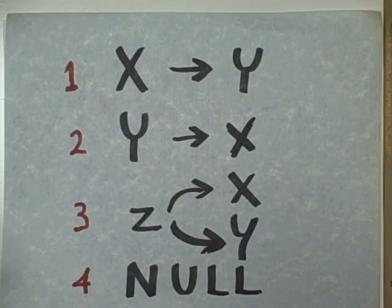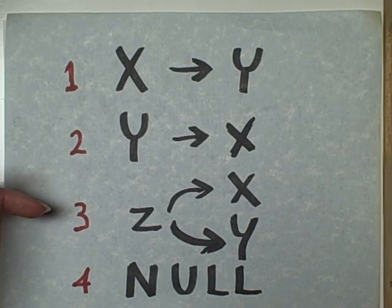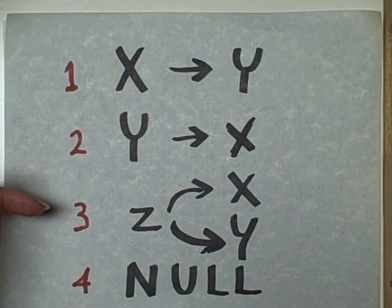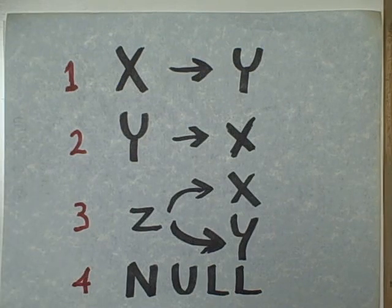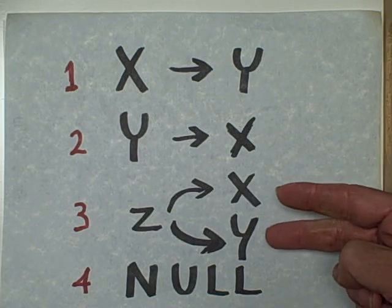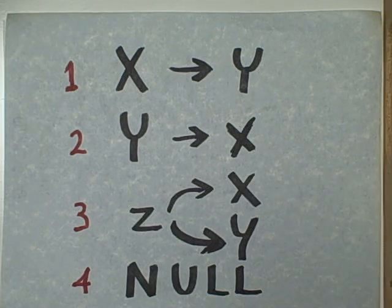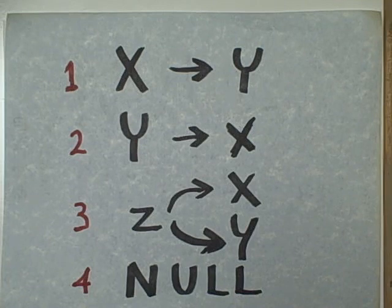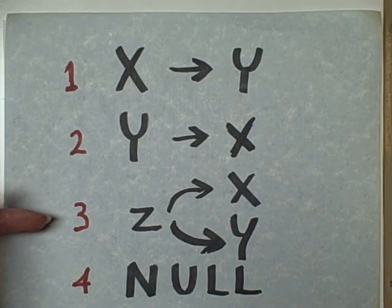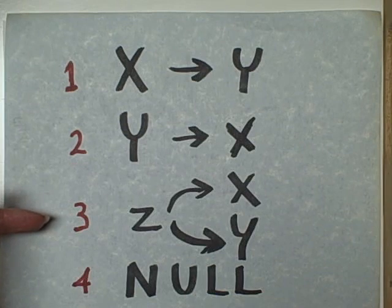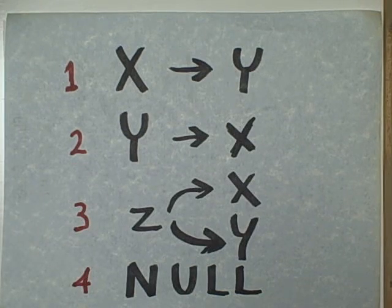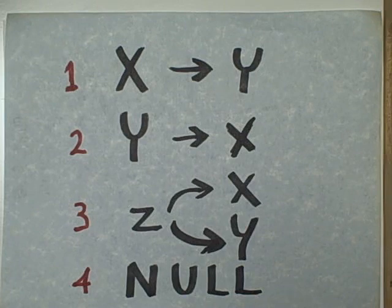But there is a third possible explanation that many students fail to consider, and that is what we call a spurious relationship. The correlation is real, but x does not cause y. Y does not cause x. Both x and y are merely effects, dependent variables, of some other underlying cause, in this case symbolized by the letter z. Z caused x, z caused y, and that's why x and y vary together.